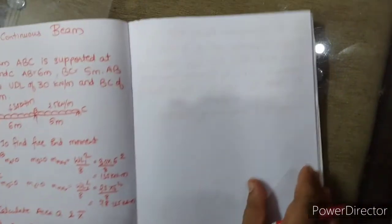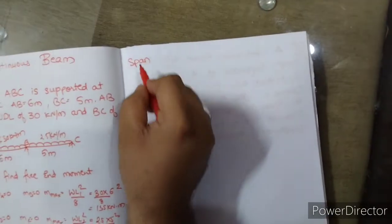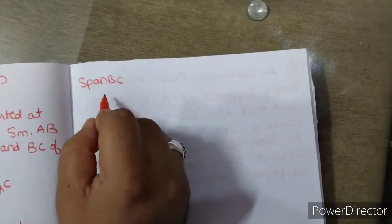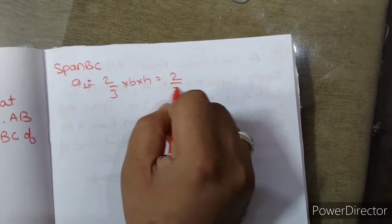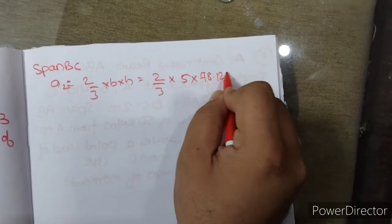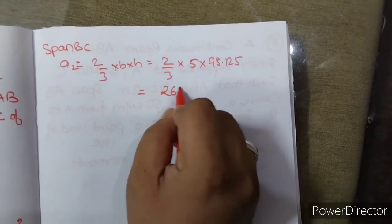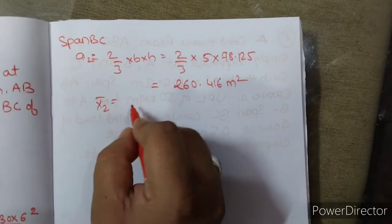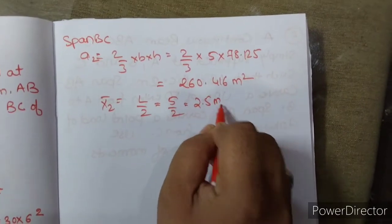अब same यही चीज़ span BC के लिए solve करेंगे. Span BC के लिए — फिर से UDL है — A2 = 2/3 into B into H. 2/3 into B — इस case में 5 — into WL square by 8 का answer 78.125. तो A2 का answer आता है 260.416 meter square. X2 bar is equal to L by 2 = 5 by 2 = 2.5 meter.